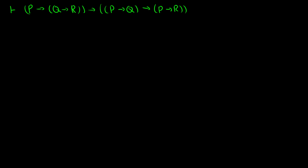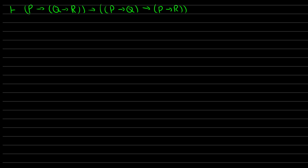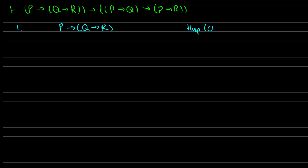The second theorem: if we have P→Q→R, then we have (P→Q)→(P→R). This one is a little bit longer but the same idea. First we're going to assume P→Q→R for a conditional proof. We'll keep assuming antecedents and apply CP three times to get the final result. In line one I'm going to assume P→Q→R as a hypothesis for conditional proof.